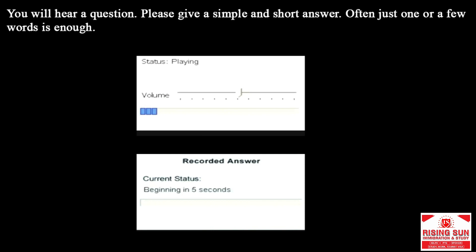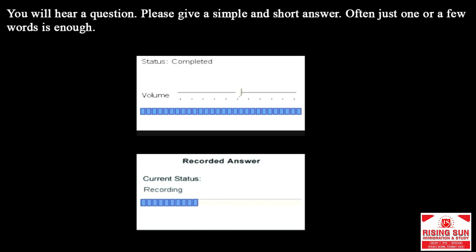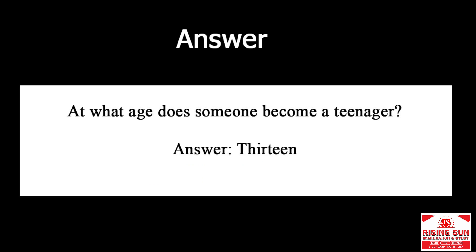At what age does someone become a teenager? Answer: 13.